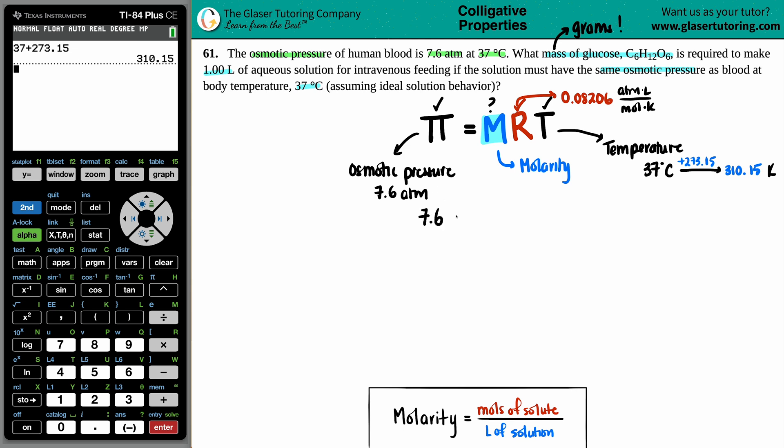So 7.6 equals x times R times T. We got R, which is 0.08206, and then we got the temperature of 310.15. Let's multiply these together. So this value times 0.08206. So now we get 7.6 equals 25.45 times x.